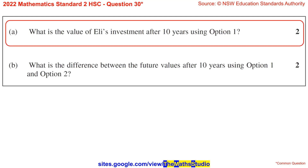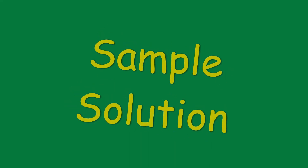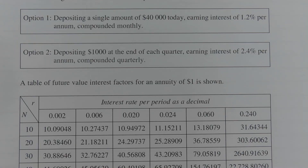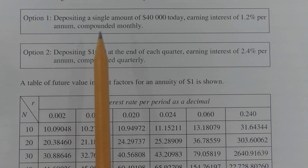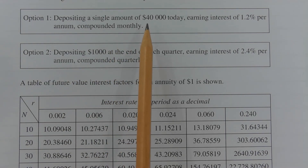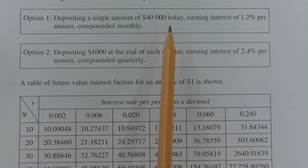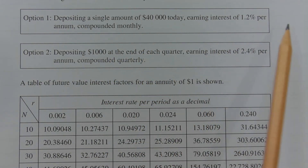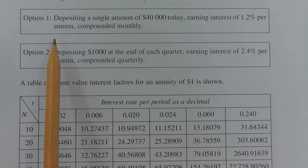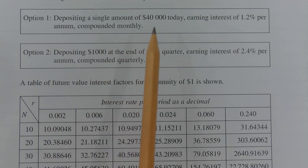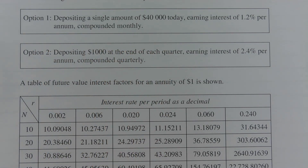Part A: What is the value of Eli's investment after 10 years using Option 1? Option 1 involves depositing a lump sum of $40,000 at the start, earning interest of 1.2% per annum, compounded monthly. That means there are 12 compounding periods per year.